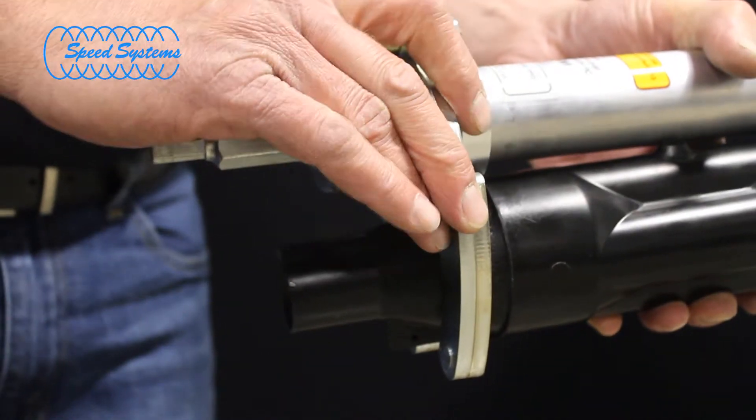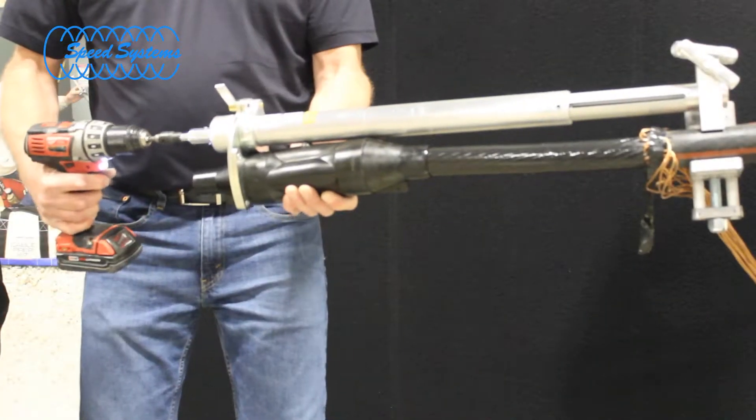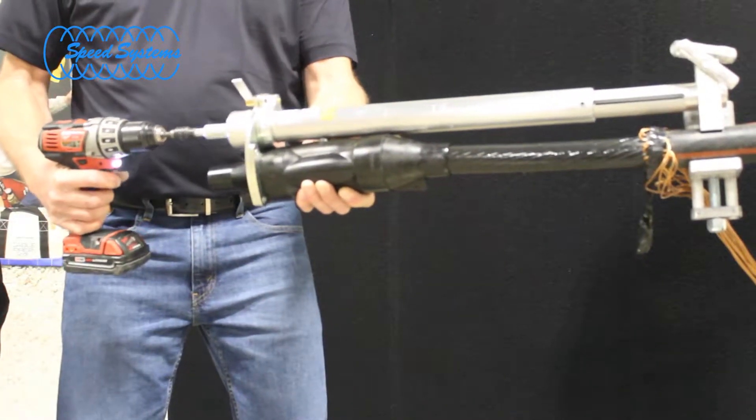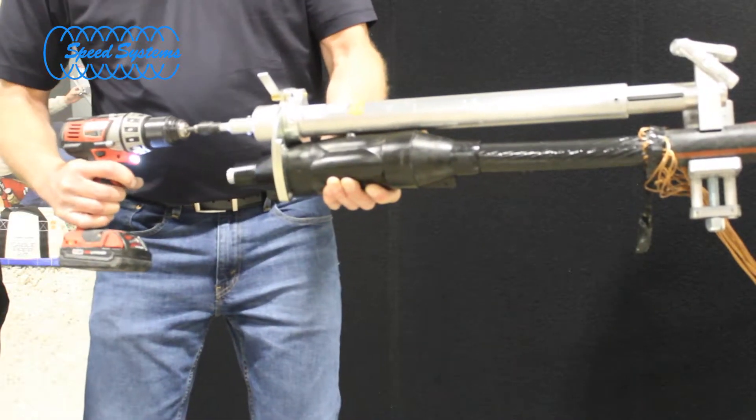Snug the gripping jaws to the splice body and tighten the lock screw. Use a ratchet wrench or low speed drill to drive the splice body onto the cable. Do not use an impact wrench.